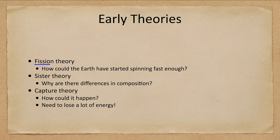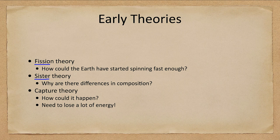Another previous theory is the sister theory, which means that the Earth and the moon just formed together in space. A couple of questions arise: first of all, why are they so different in composition in terms of density and other materials?